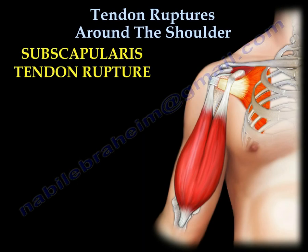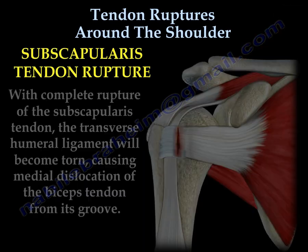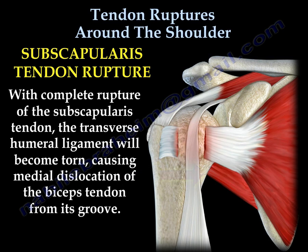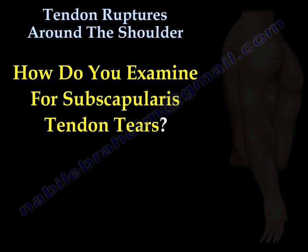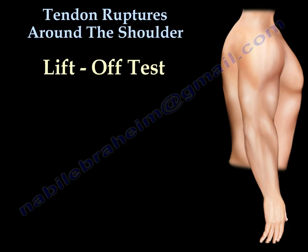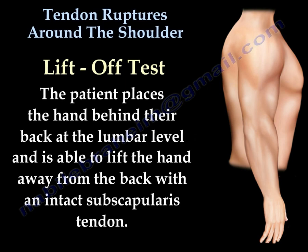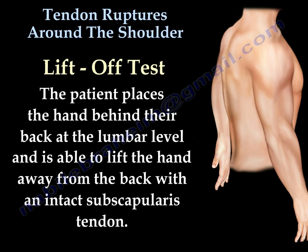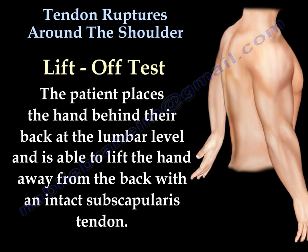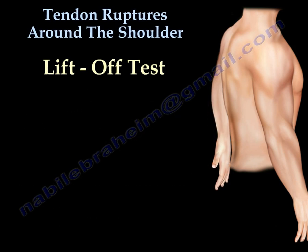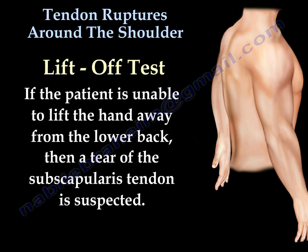Subscapularis tendon rupture. With complete rupture of the subscapularis tendon, the transverse humeral ligament will become torn, causing a medial dislocation of the biceps tendon from its groove. The lift-off test is often used to diagnose subscapularis tendon tears. The patient places the hand behind the back at the lumbar level. If the patient can lift their hand away from their back, this is a sign of an intact subscapularis tendon. If the patient is unable to lift the hand away from the lower back, then a tear of the subscapularis tendon is suspected.